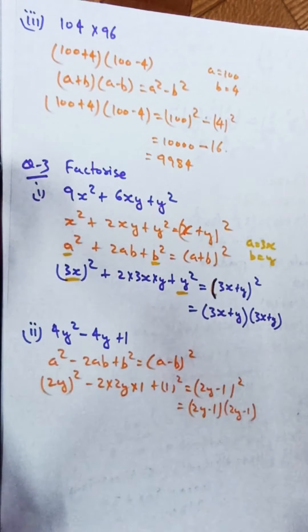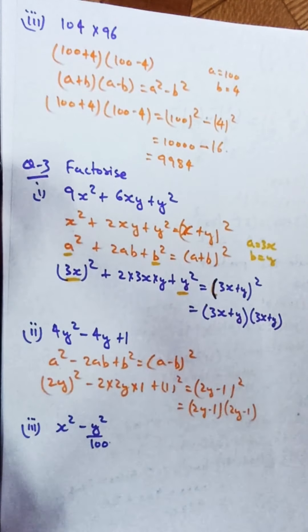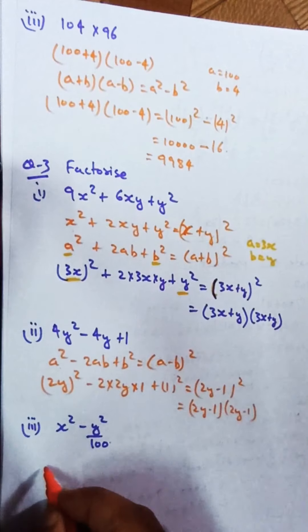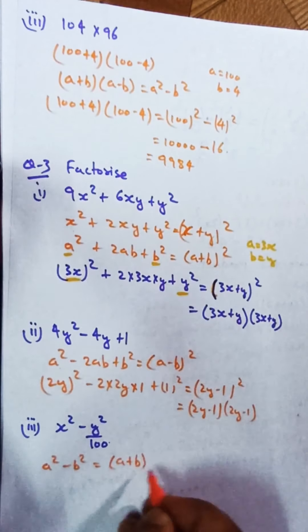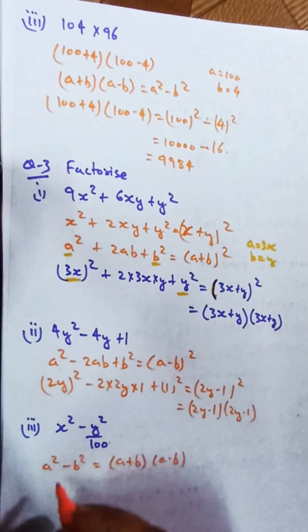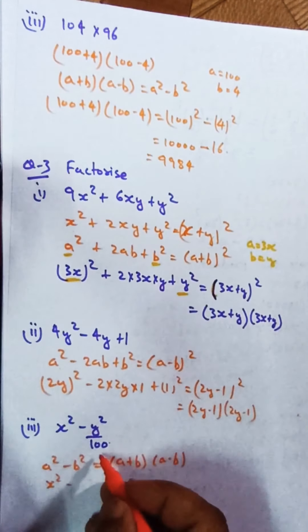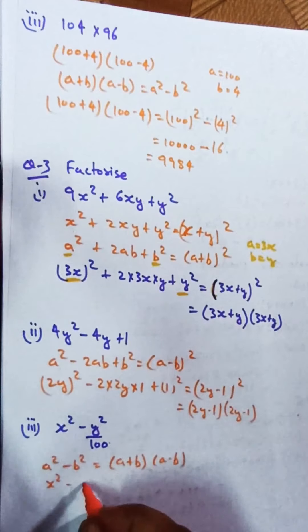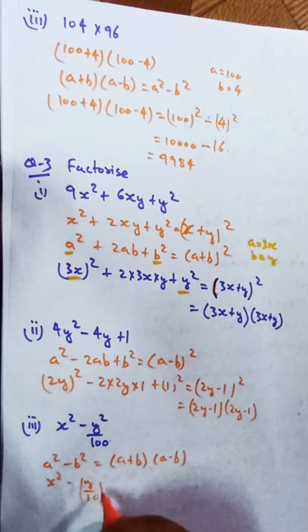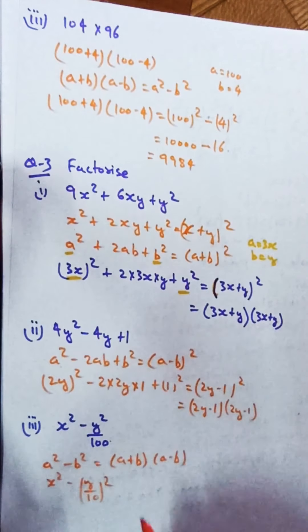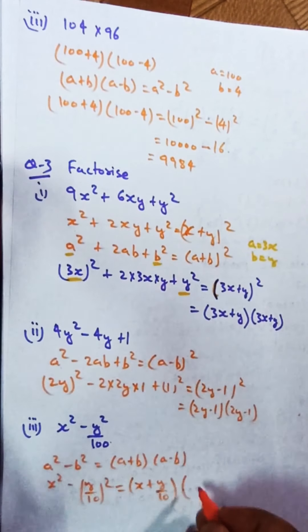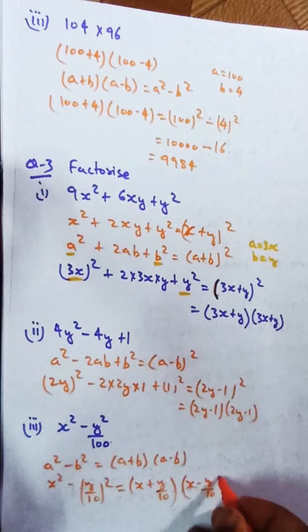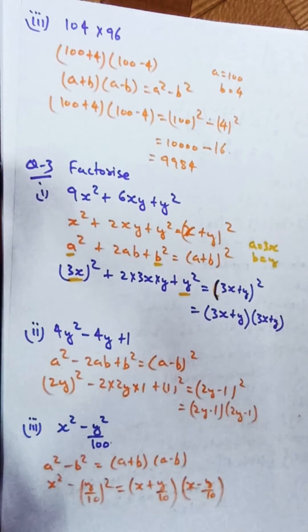Part 3: factorize x² - y²/100. Using a²-b² = (a+b)(a-b), with a=x and b=y/10 since 100=10². So x² - (y/10)² = (x + y/10)(x - y/10). Hope this is clear.